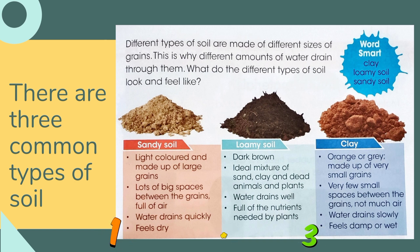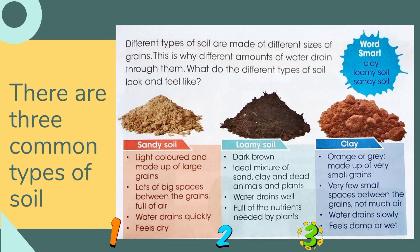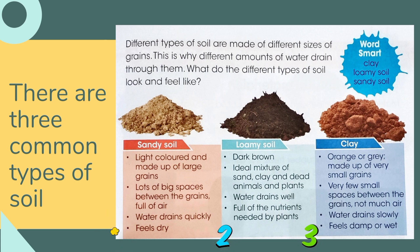There are three common types of soil. One: sandy soil — sandy soil is light in color and feels dry. Two: loamy soil — loamy soil is dark brown and full of nutrients. Three: clay — clay is orange or gray and feels damp or wet.